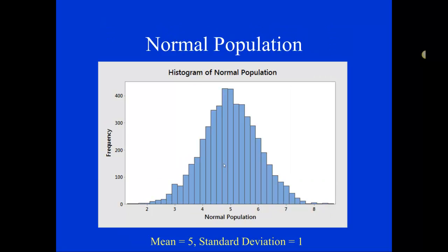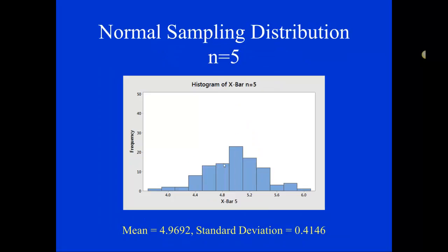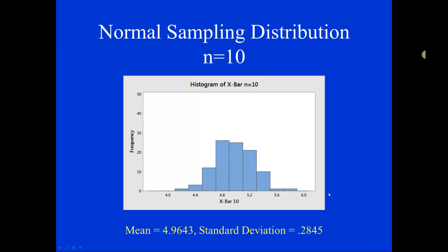So notice the shape of the population was normally distributed, and when we took samples of size 5, the shape of our sampling distribution is also roughly normally distributed. When we took samples of size 10, you can see that we still have normal distribution going on, and samples of size 30, we're still getting a normal distribution.